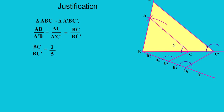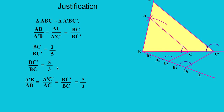Looking at the figure, BC/BC' = 3/5, so BC'/BC = 5/3. Therefore, A'B/AB = A'C'/AC = BC'/BC = 5/3. That means the sides of triangle A'BC' are 5/3 of the sides of triangle ABC. That is all for today's class. Have a nice day.